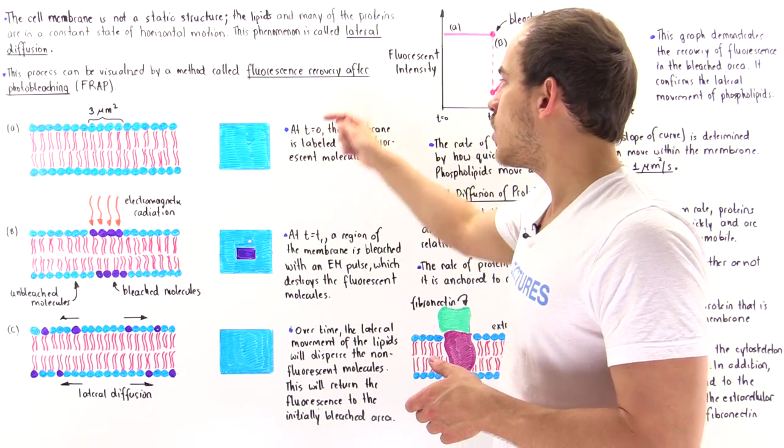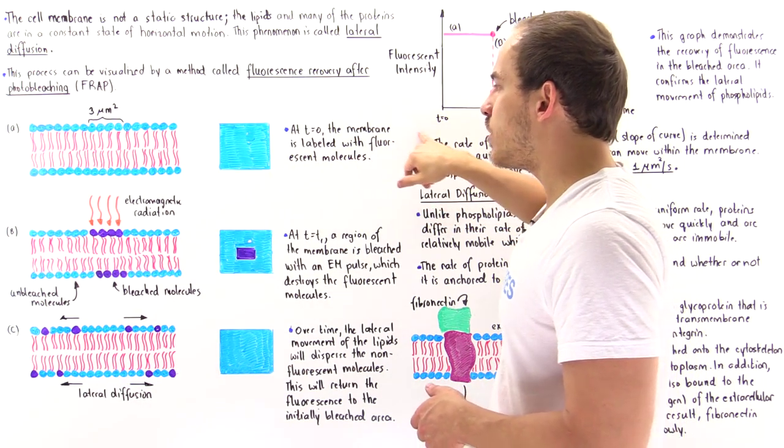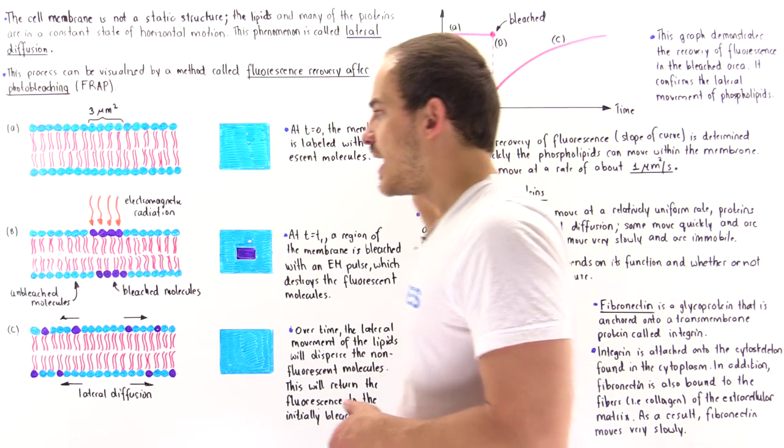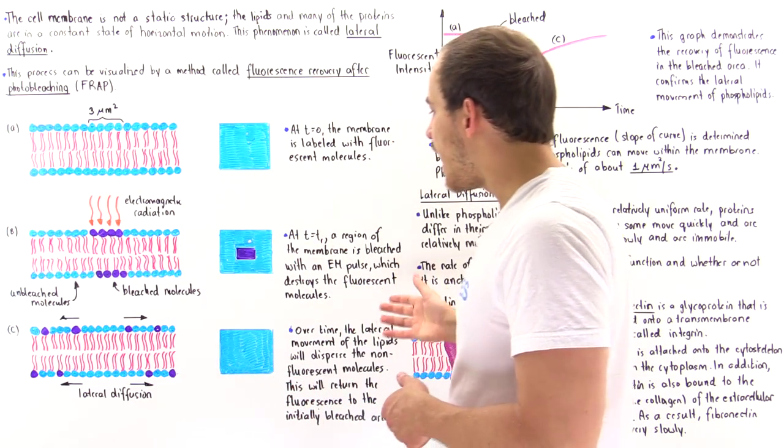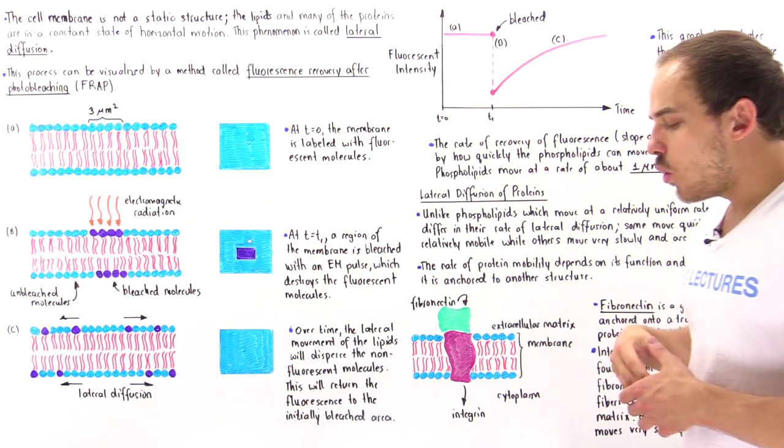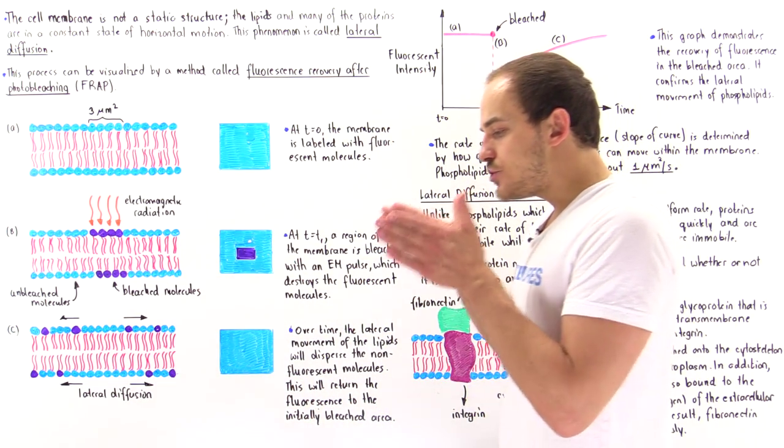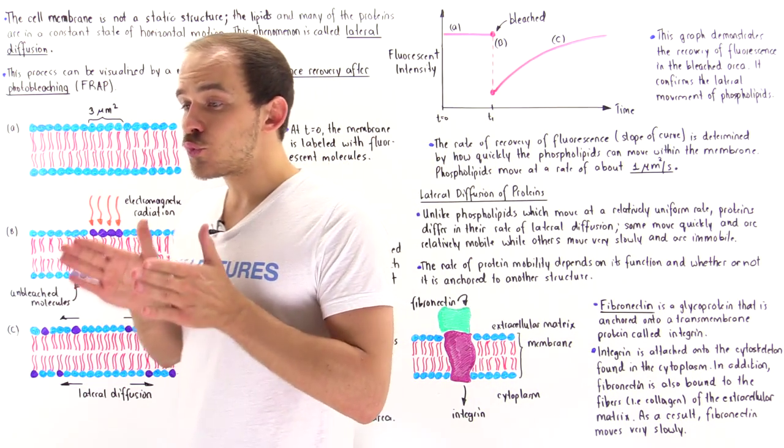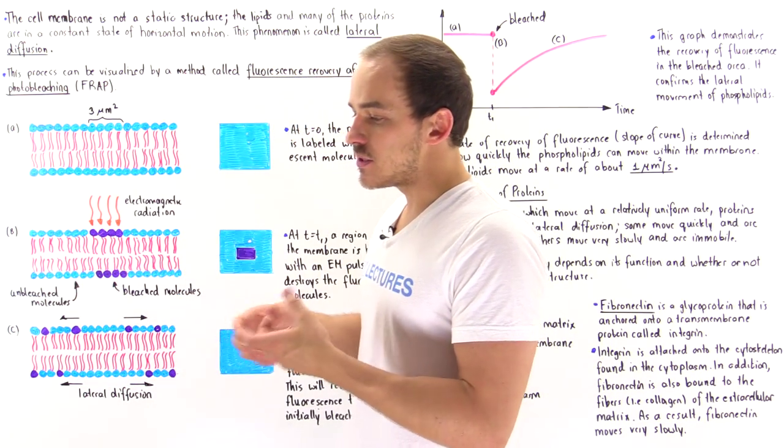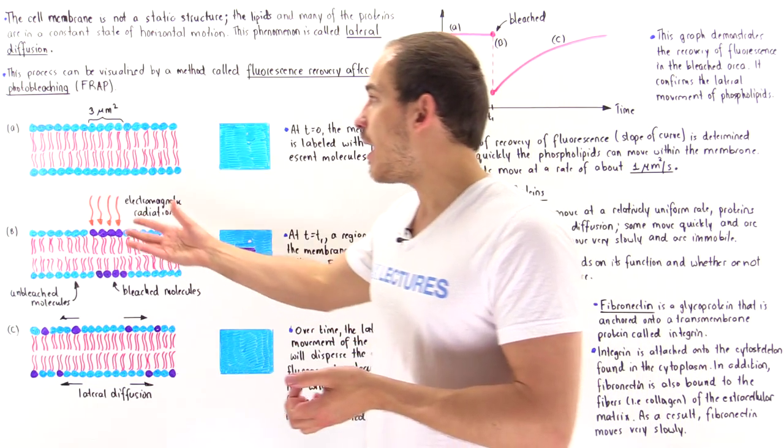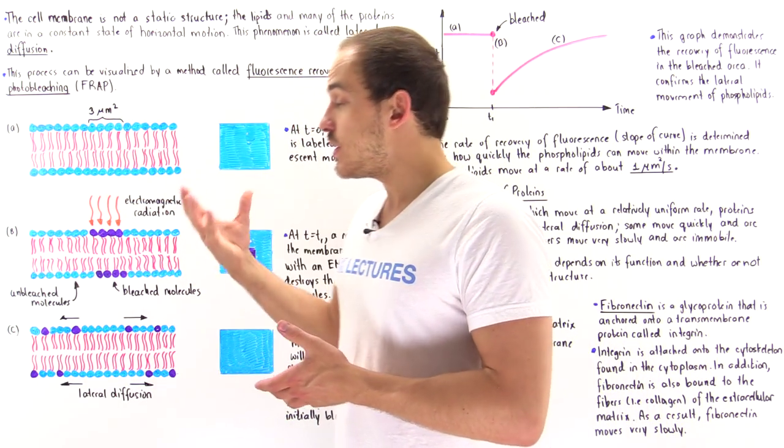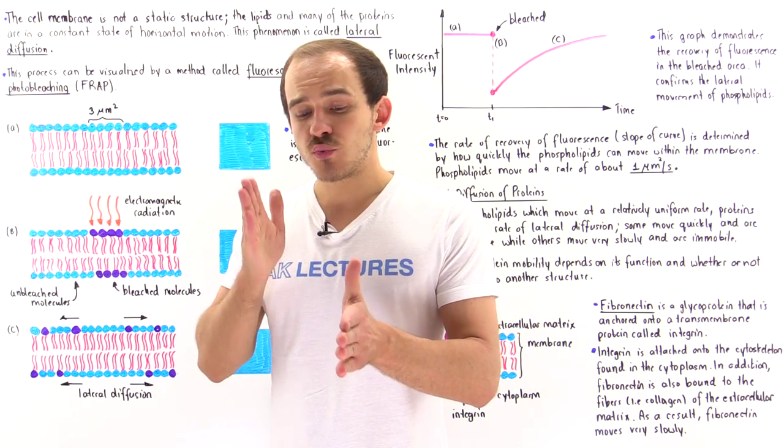So at a time of zero, the membrane is labeled with fluorescent molecules. Now let's suppose at time T1, what we do is we choose a certain area, a certain region of that particular membrane. Let's suppose the area is about 3 micrometers squared.